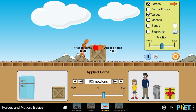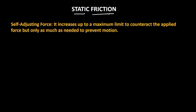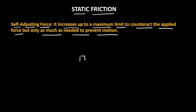As I keep on increasing the applied force, the friction force also increases, and there is a maximum possible value to the static friction — in this case that value is 125 Newton. So what we just saw is that static friction is a self-adjusting force. It increases up to a maximum limit to counteract the applied force, but only as much as needed to prevent the motion. So if I apply 5 Newton, static friction is 5 Newton; if I apply 125 Newton, static friction is 125 Newton.